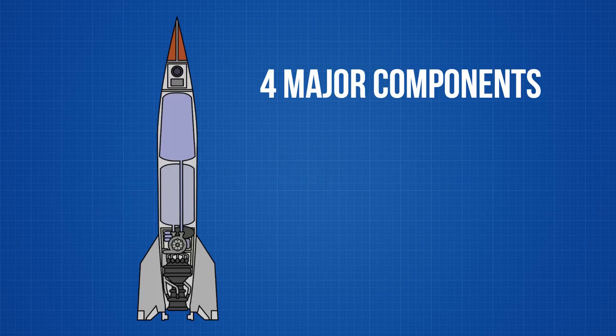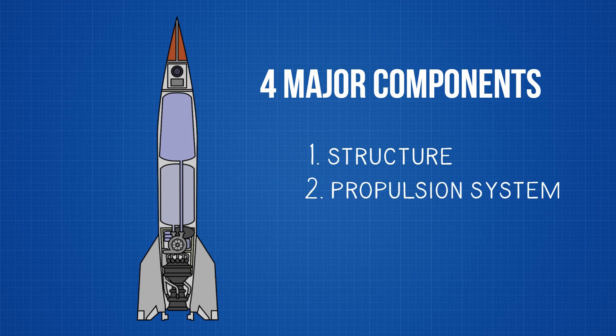So, a rocket typically consists of four major systems. The structural system, the propulsion system, the guidance system, and the payload system.